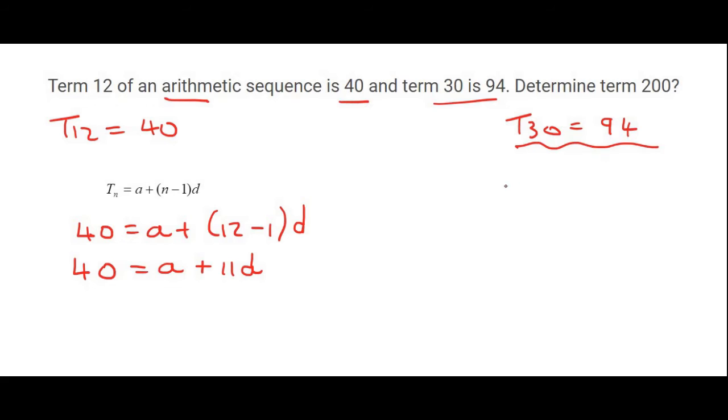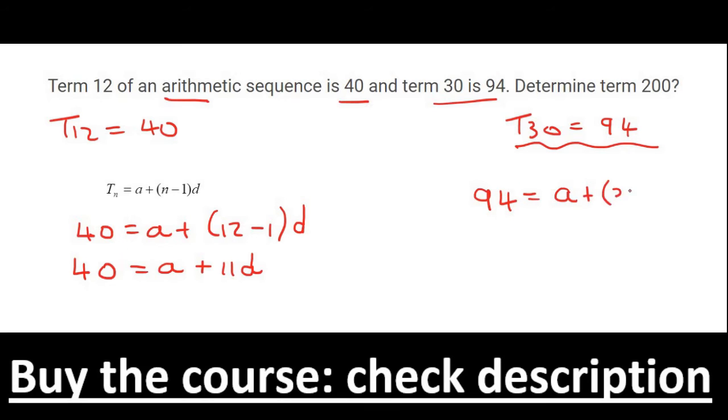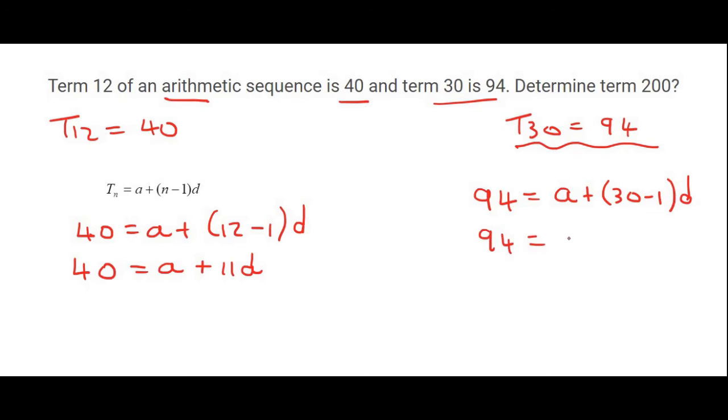Then I do this one over here, and so I could say 94 is equal to a plus (30 minus 1) times d, and so 94 is going to be a plus 29d.